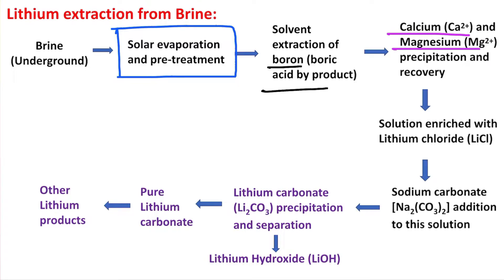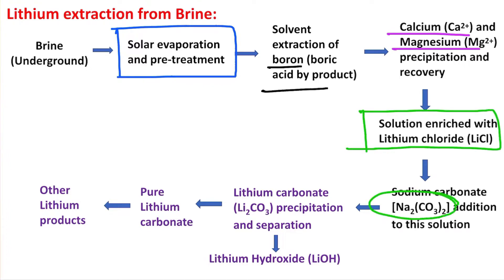At this stage, the remaining Group 1 metals are sodium, potassium, and lithium. The lithium concentration is now relatively enriched. From that solution, lithium is extracted by addition of sodium carbonate solution. Through ion exchange, lithium chloride is converted into lithium carbonate, and since lithium carbonate is insoluble, it gets precipitated out.